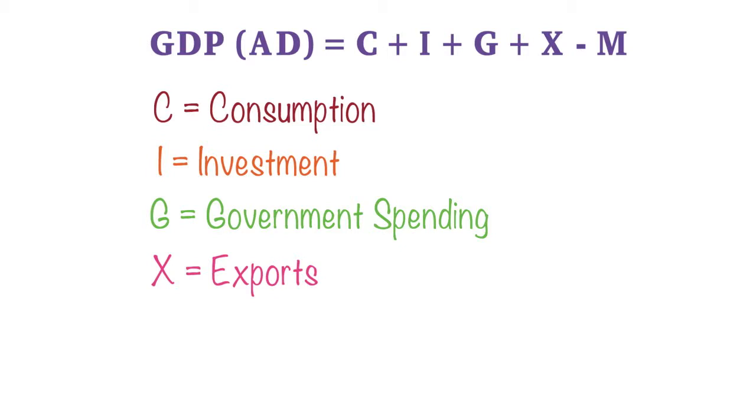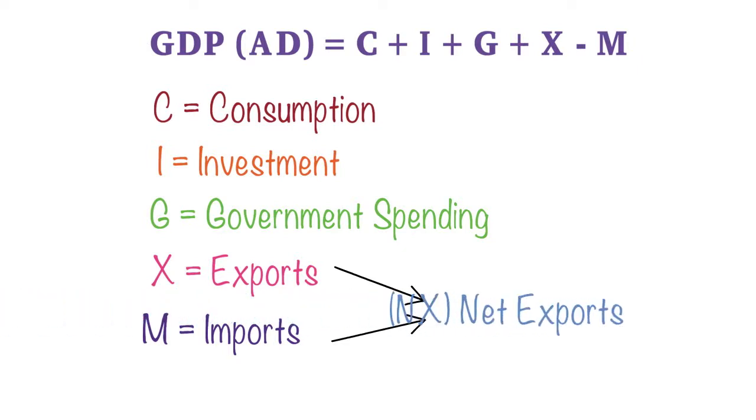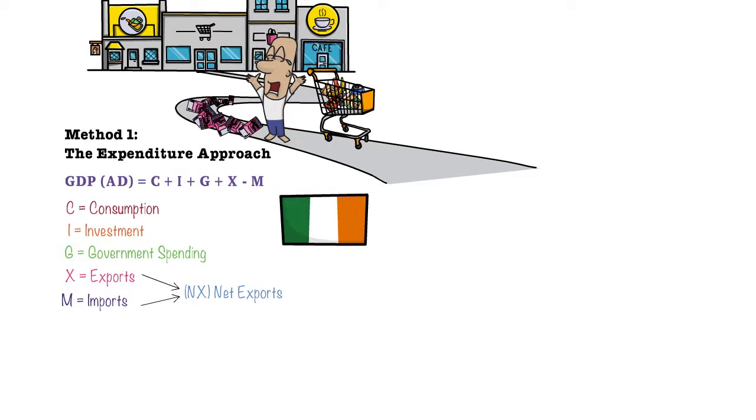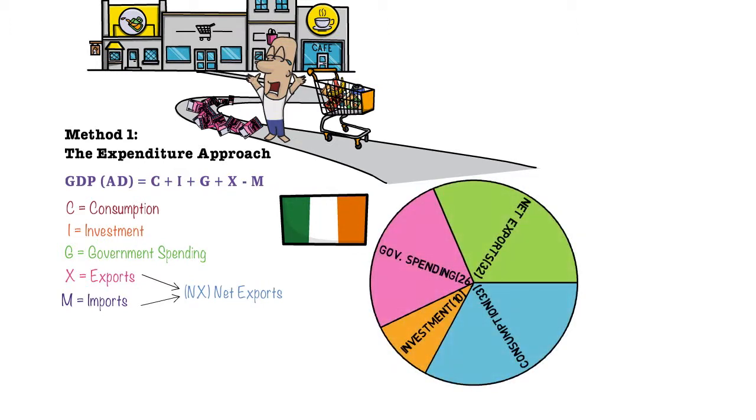And we take away imports. So this is the final factor here. When we import products, we are spending money outside of the country, so money leaves the country for these products. And finally, in our identity, what we have is exports minus imports, so we add this in to our GDP figure. What we can see for Ireland is we see that GDP is made up of exports of about 32%, consumption is 33%, investment is about 10%—the smallest component—and government spending is 26%. So that's a breakdown of spending in the economy.